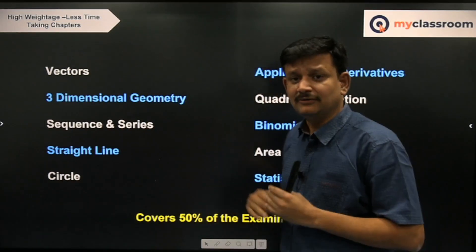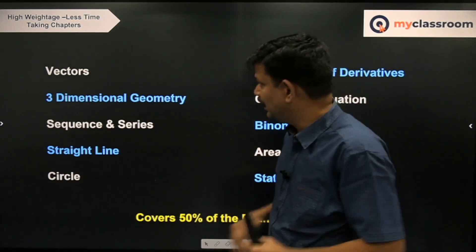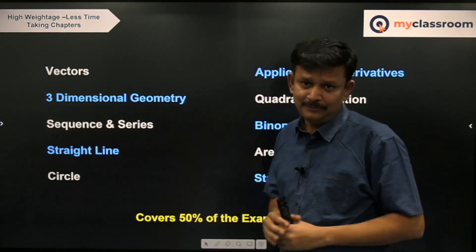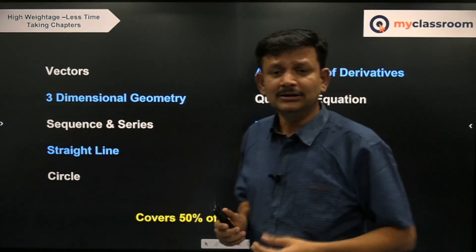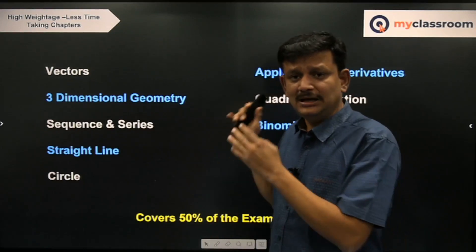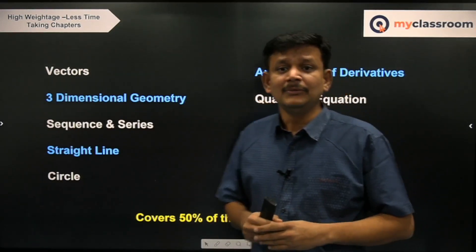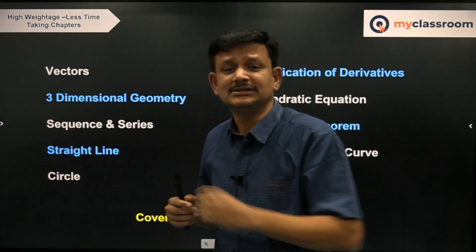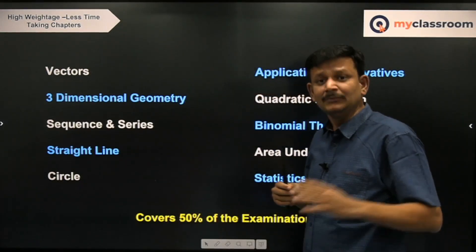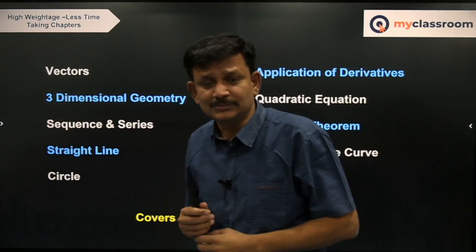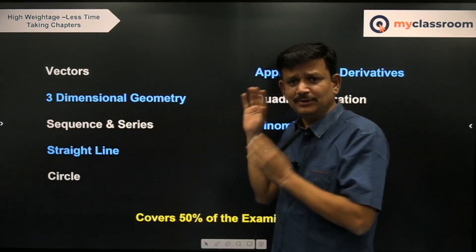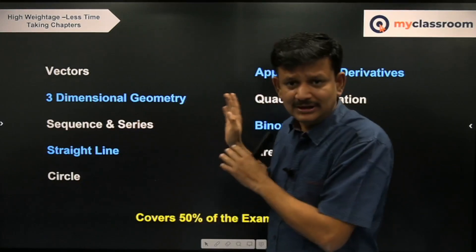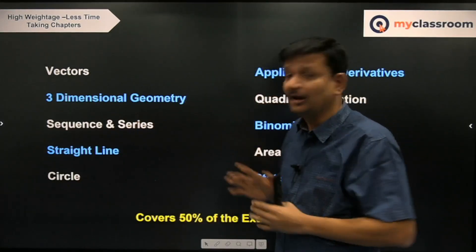Three-dimensional geometry is again something which you can easily cover. If you look at all the previous year questions, JEE Main questions revolve around whether two planes are coplanar or not, how to find the line of intersection between a line and a plane, and distance between skew lines. These are the simple concepts being asked in three-dimensional geometry, and covering them will not take much time at all.